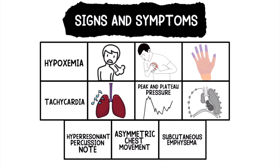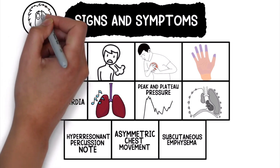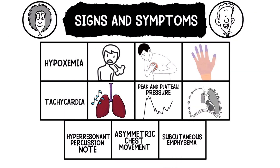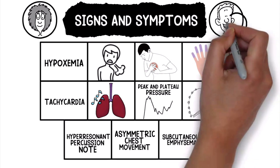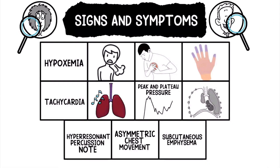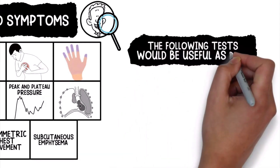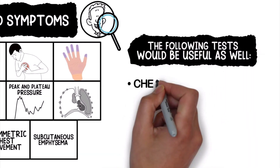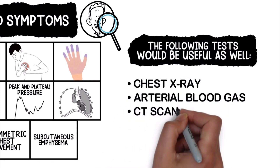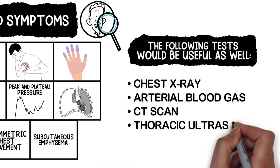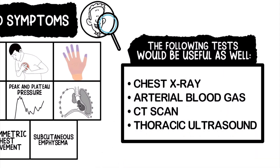Keep in mind that the signs and symptoms may vary from patient to patient depending on their condition — these are just a few of the most common examples. When diagnosing a potential pneumothorax, the patient's signs and symptoms should let you know right away that it's a possibility. The following tests would also be useful: chest x-ray, arterial blood gas, CT scan, and a thoracic ultrasound.